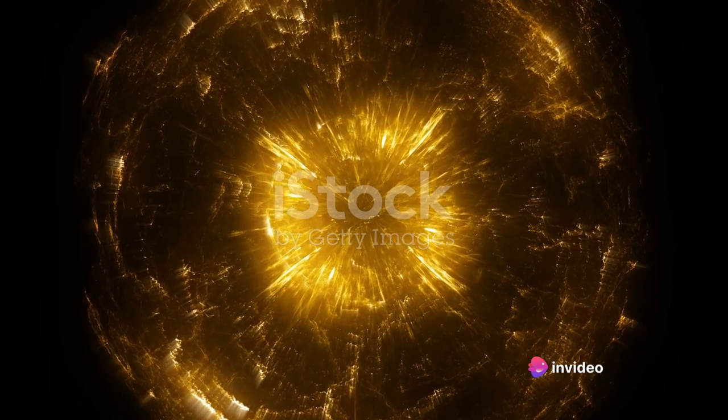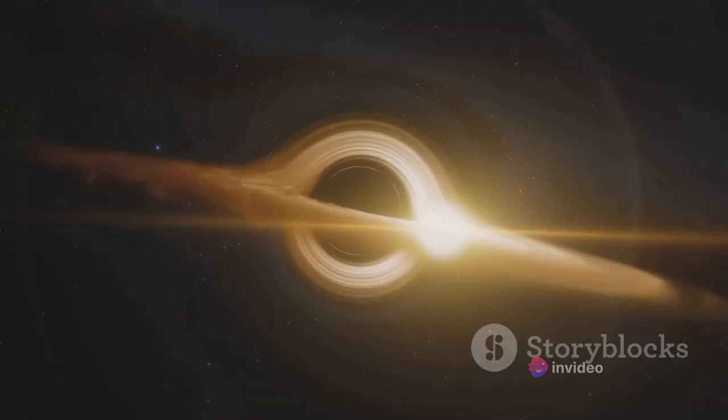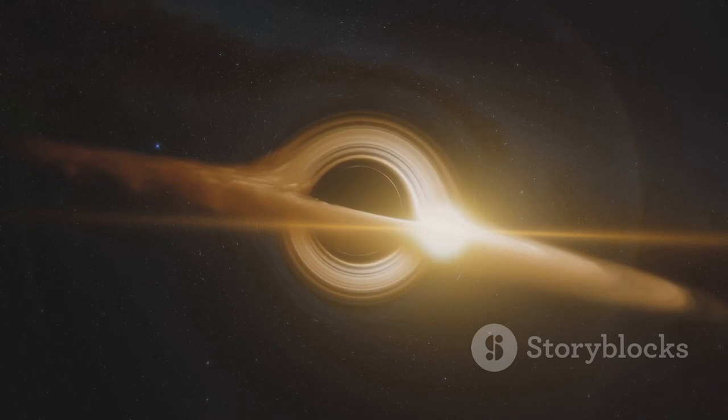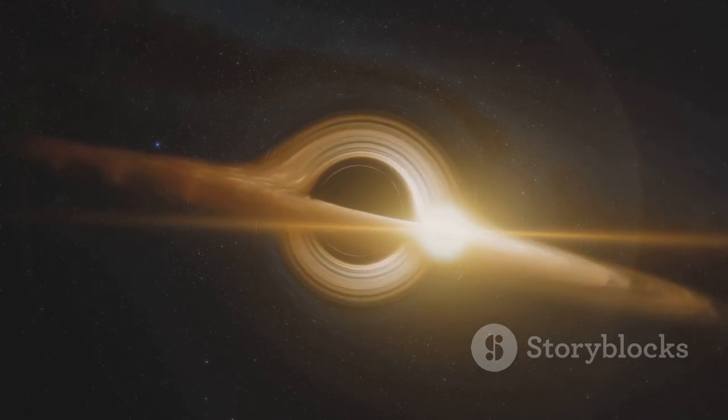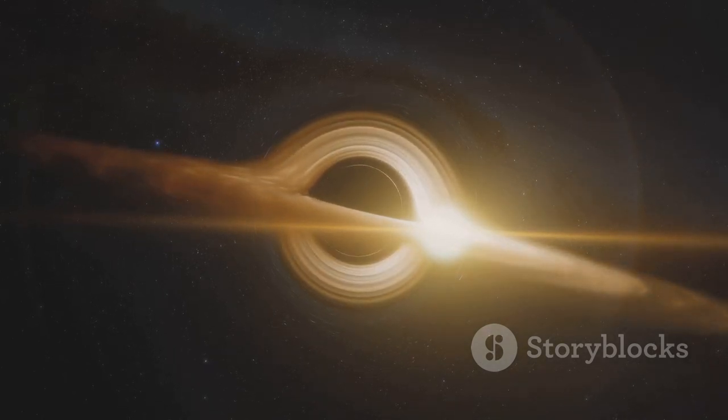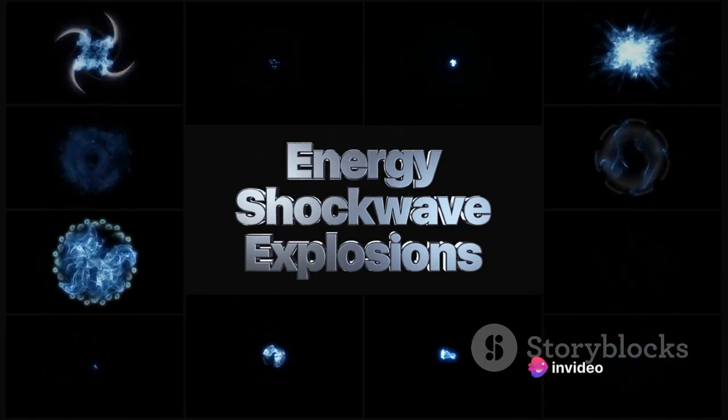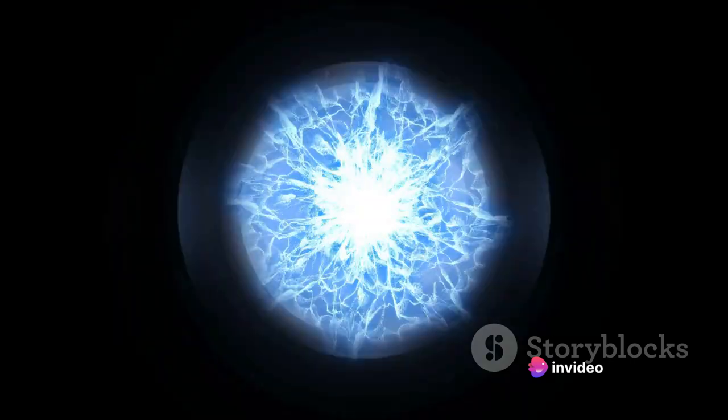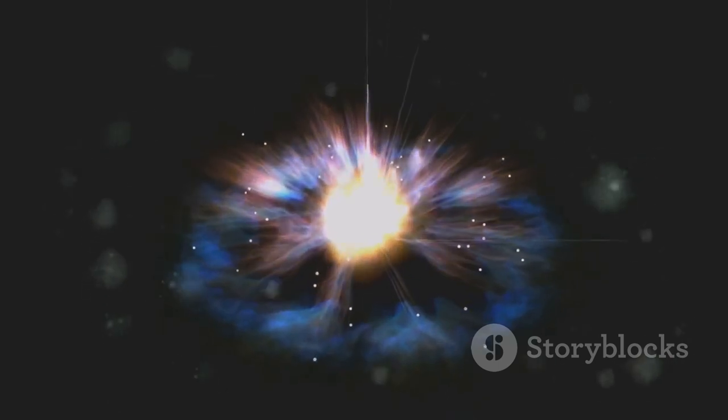It all begins when a star exhausts its nuclear fuel. The core collapses under its own immense gravity, causing the outer layers of the star to cave inwards. As the core implodes, it rebounds, creating a shock wave that propels the outer layers into space at unimaginable speeds. This cataclysmic explosion outshines entire galaxies, a brilliant display of cosmic fireworks that can briefly outshine all the stars in its host galaxy combined.